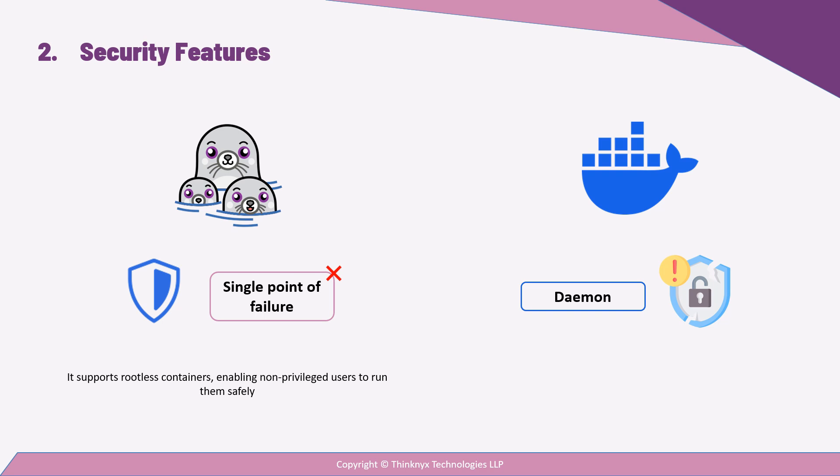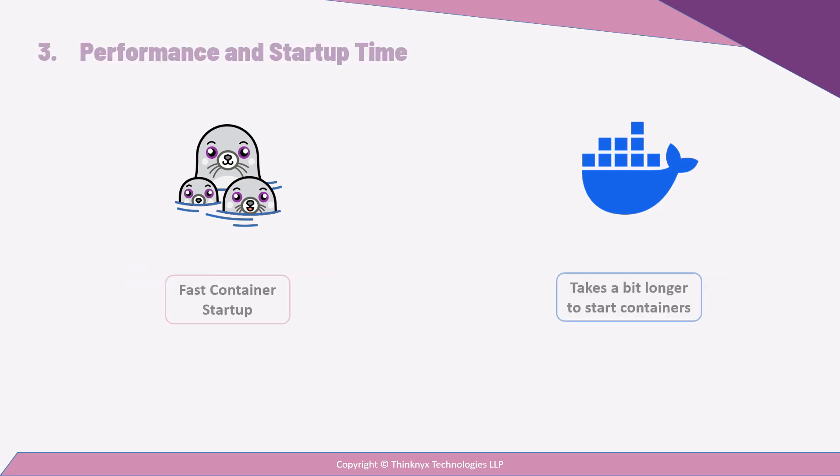However, Docker has recently introduced a rootless mode for its daemon configuration, enhancing security by allowing users to run containers without requiring root privileges. Podman often leads the pack with faster container startup times. By eliminating the need to initiate a daemon, it can launch containers more quickly, which is a boon for developers needing speed.